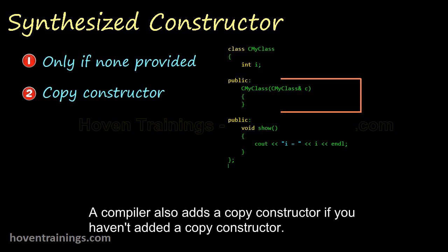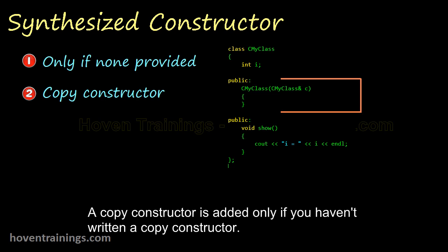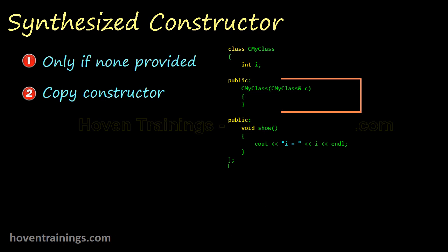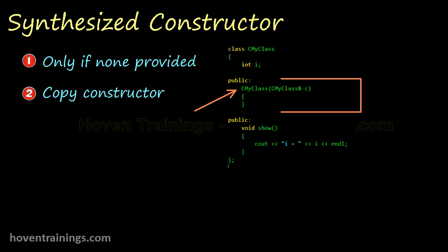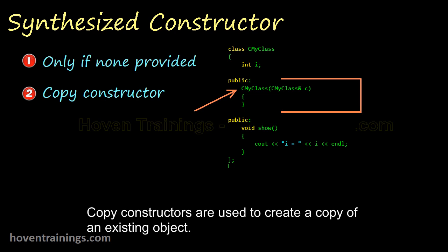A compiler also adds a copy constructor if you haven't added a copy constructor. A copy constructor is added only if you haven't written a copy constructor. So if you added a default constructor, then the compiler would add a copy constructor. Copy constructors are covered in a later chapter. But this is how a copy constructor looks. Copy constructors are used to create a copy of an existing object.